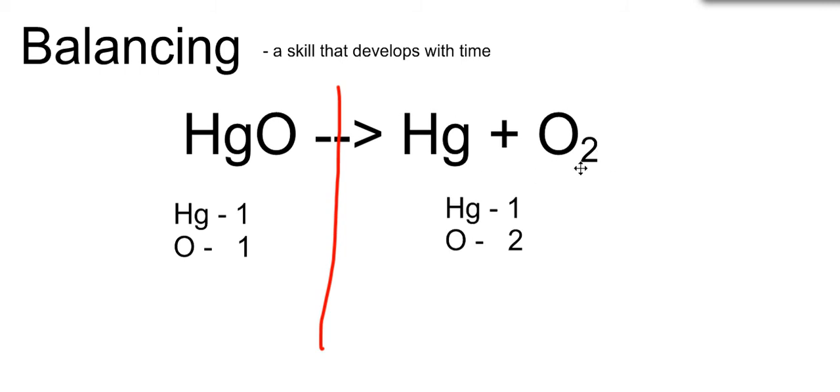On the product side, I have one mercury and I have two oxygens. Remember that subscripts apply only to what is directly in front of them.